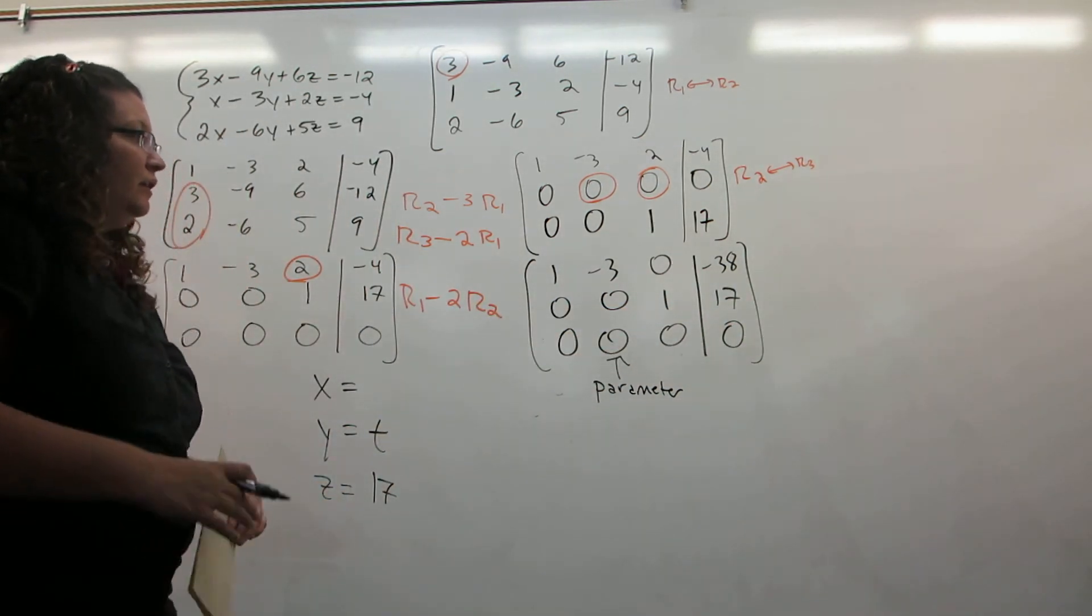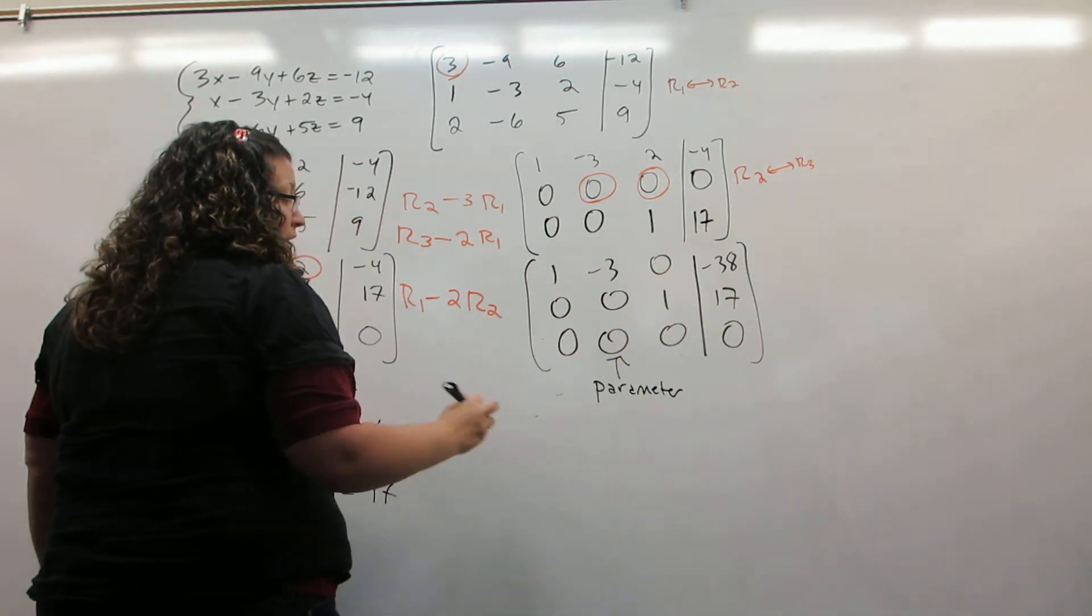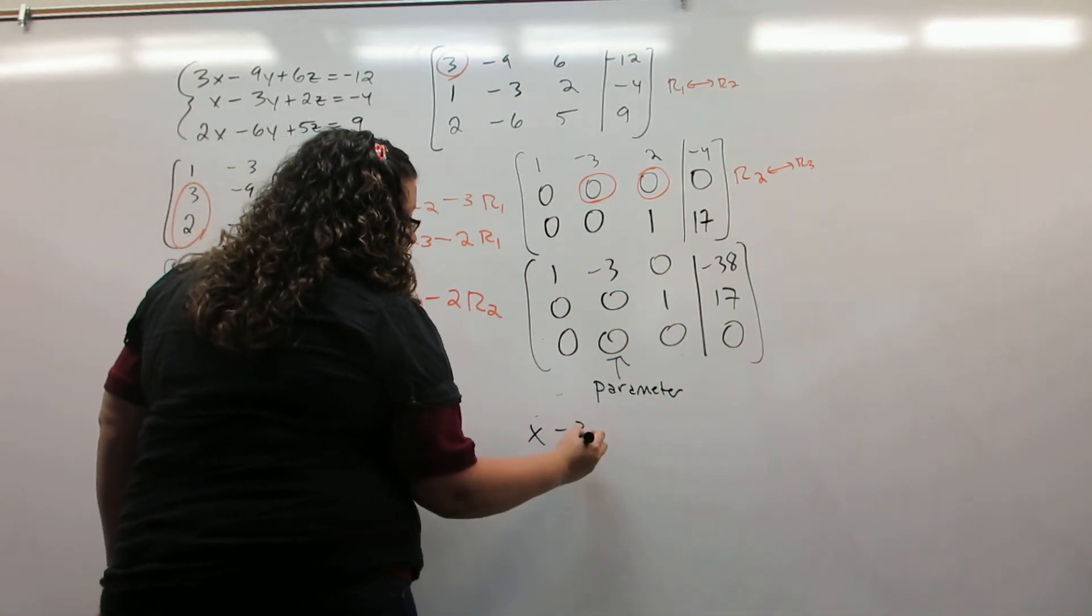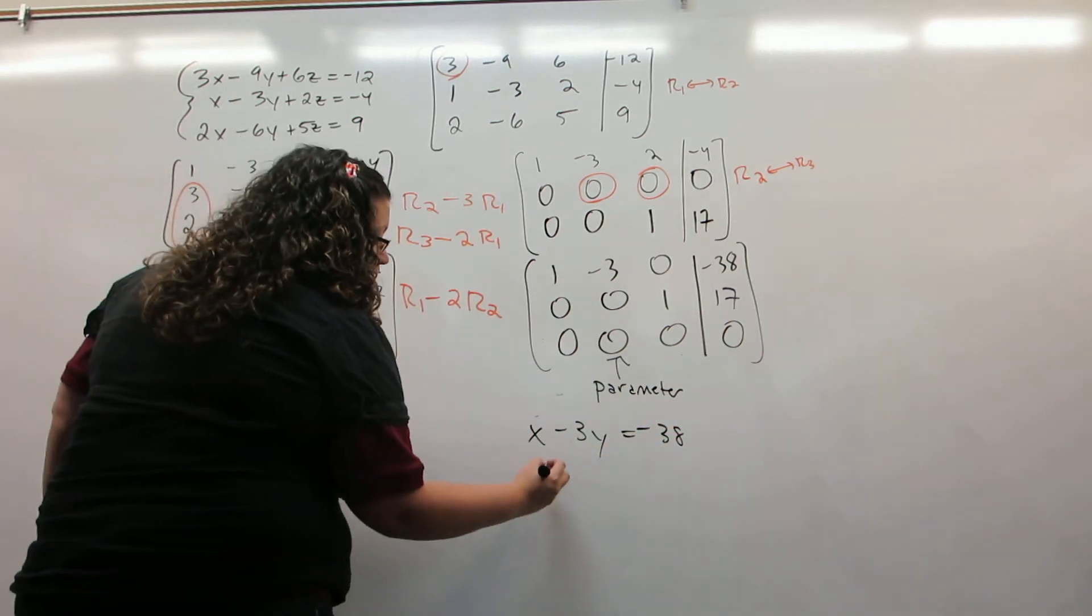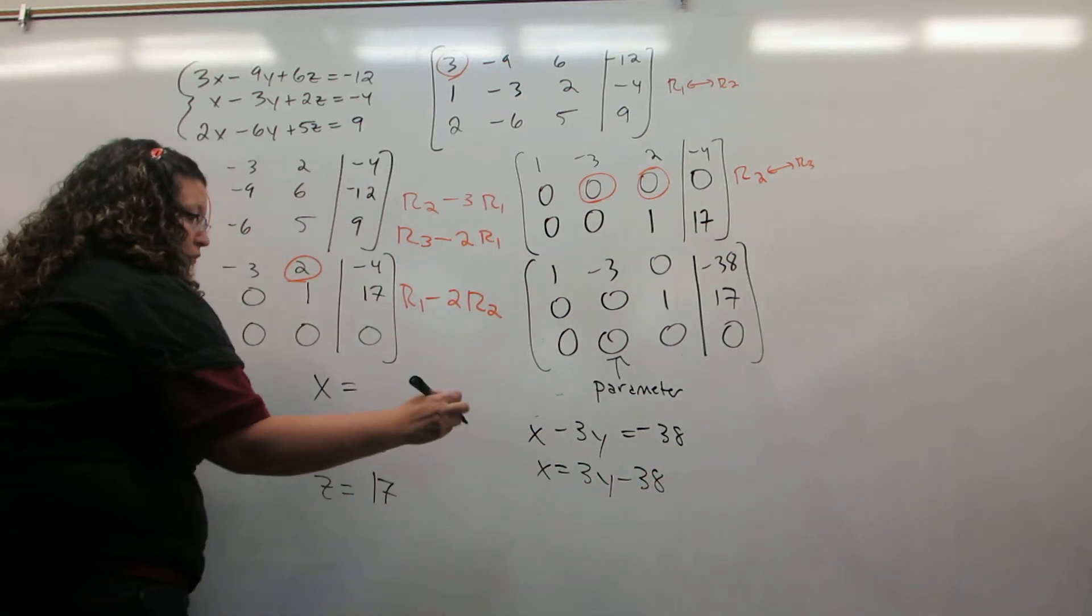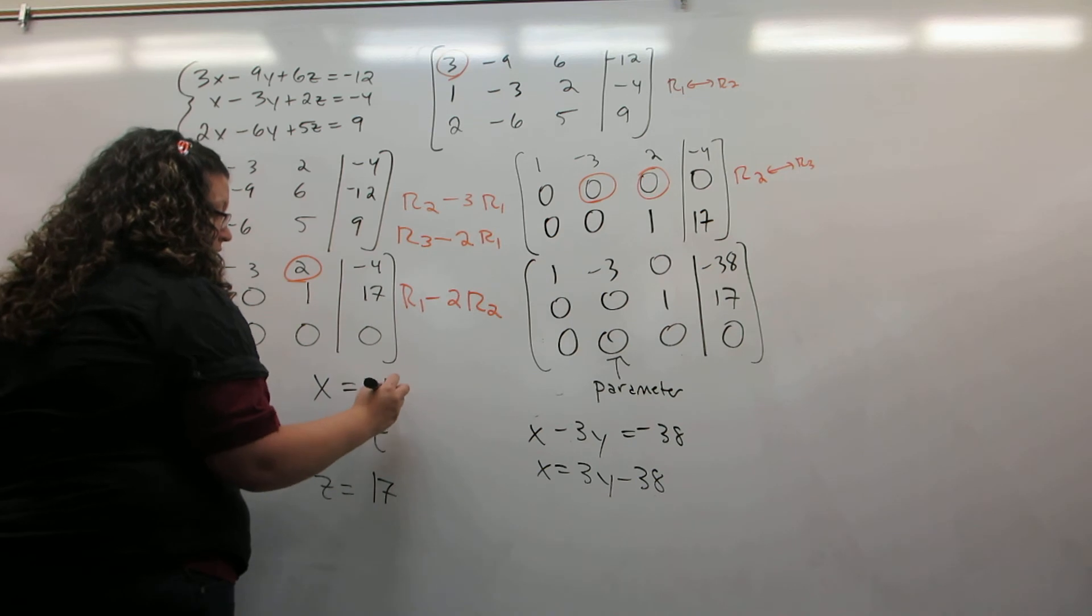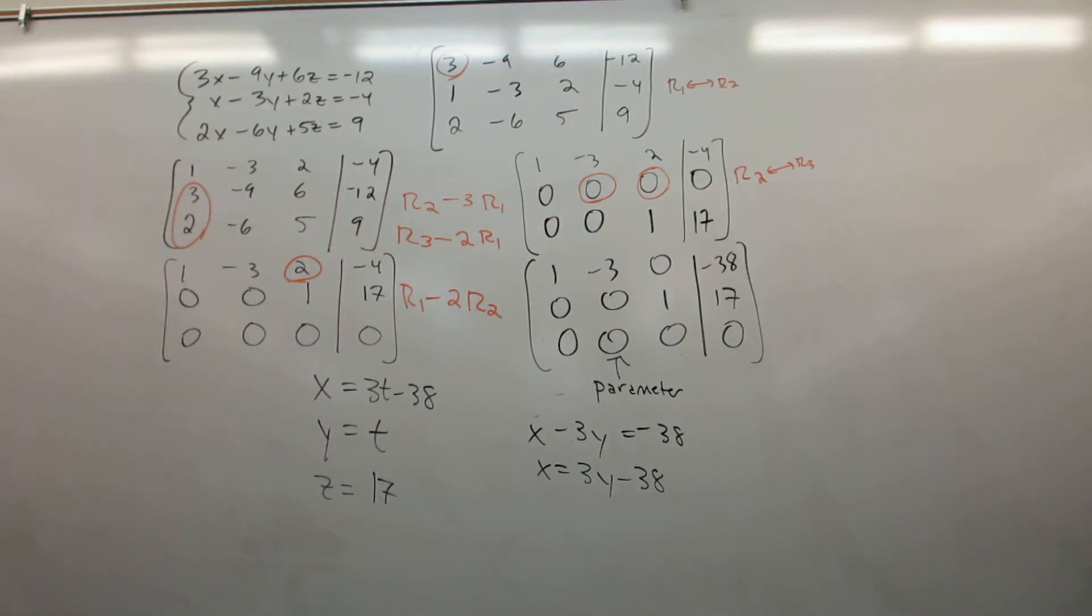So the only thing left is to determine what x is. If you take this first row and rewrite it as an equation, x minus 3y is negative 38. It says x equals 3y minus 38. Only y, we have been calling t now. So x is 3t minus 38.